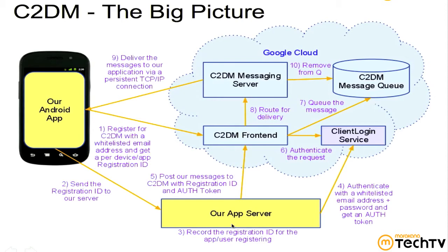You could potentially register multiple email addresses and spread them across even the same installation of the app, though I'm not sure how Google would look at that. One company found that Google recommended using one account. You could also release your app multiple times with different package names. As long as your package name differs, you'd have different permissions and registrations. This is the part that sucks — it's a Google-run service and they haven't been very upfront and clear about how to enforce these sorts of limitations.